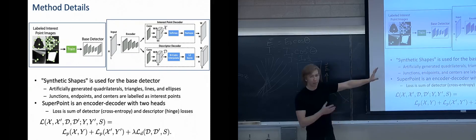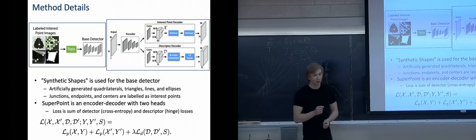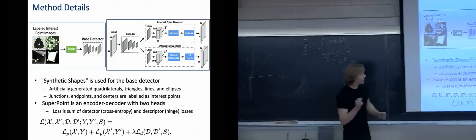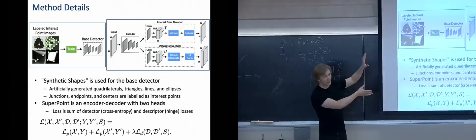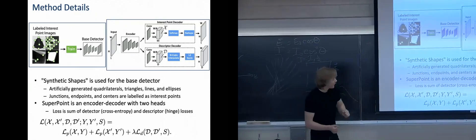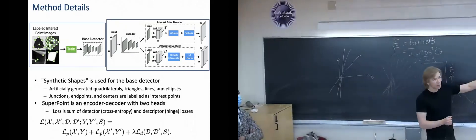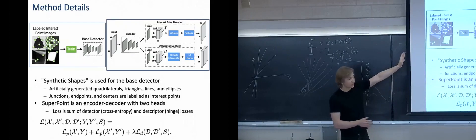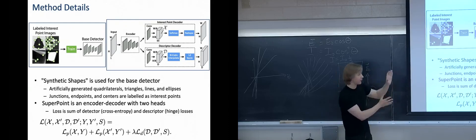The actual SuperPoint model is shown on the right. That's a standard encoder-decoder model with a shared encoder, which is just like a fully convolutional network with convolutional layers, max pooling, etc. But then you have two heads for the decoder. You have your interest point decoder which will actually obtain your interest points, and then you have your descriptor decoder. Now these are actually not learned, the decoders. For the interest point decoder, it uses softmax and reshape, and then for the descriptor decoder, it uses a bicubic interpolation and an L2 norm. There's nothing learned in the decoders to improve performance or efficiency.